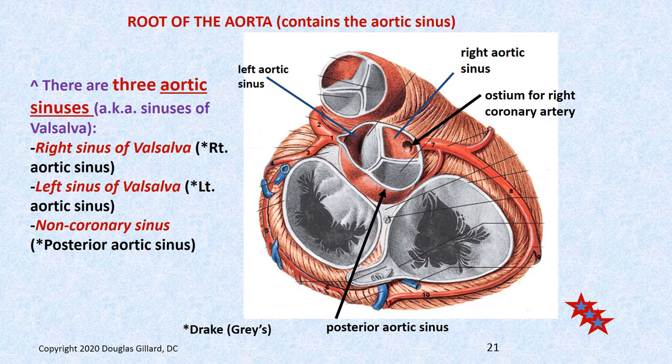Here's another picture during diastole — the AV valves are open and the semilunar valves are all closed because of backwash. I want to show you the aortic sinuses again. This is a perfect cut through the root of the aorta and there are three little bulges: a bulge on the left — that's the left aortic sinus; a bulge on the right — the right aortic sinus; and a bulge in the back — the posterior aortic sinus. The AKAs are the right sinus of Valsalva, the left sinus of Valsalva, and the non-coronary sinus.